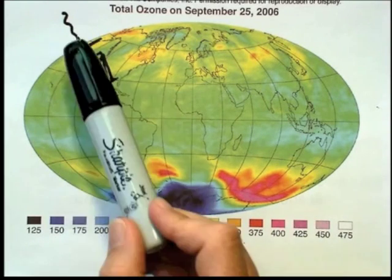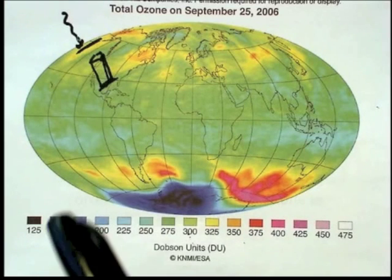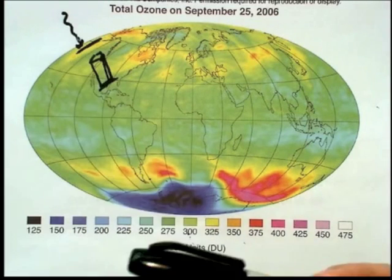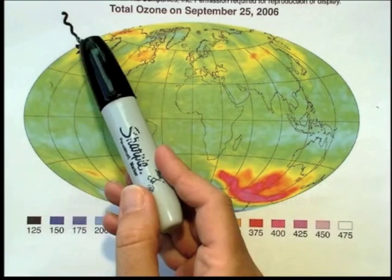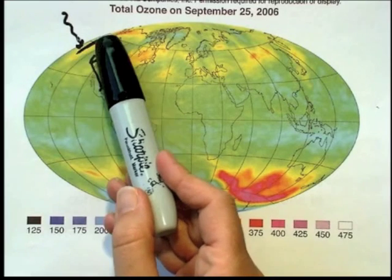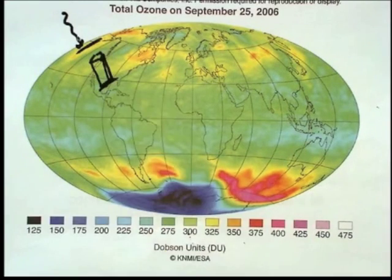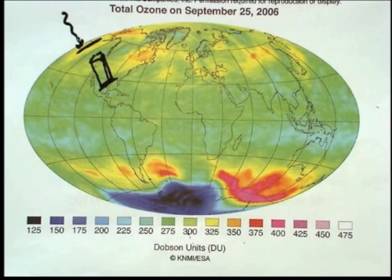There are a lot of details here we need to understand to really grasp this: the amount of ultraviolet light at the top of the atmosphere is greater than the amount of ultraviolet light at the bottom of the atmosphere, and we want to understand how that happens and what we're talking about.